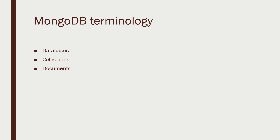In the MongoDB world, we talk about databases, collections, and documents instead of databases, tables, and rows. This kind of gets away from the notion of a fixed schema, which is implied in the words table and row. A MongoDB database contains collections, and any collection contains a collection of documents. Conceptually you can think of them the same way, but collections can contain pretty much anything. The main restriction is that you cannot move data between collections across different databases — if you need to reference data between collections, they need to be within the same database.